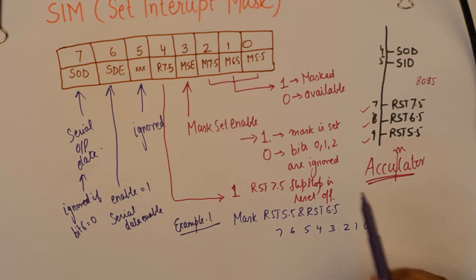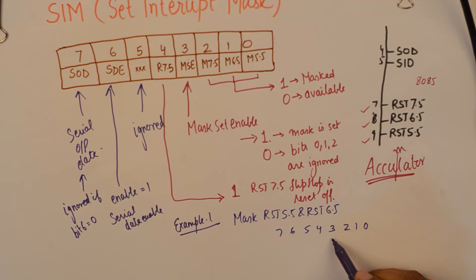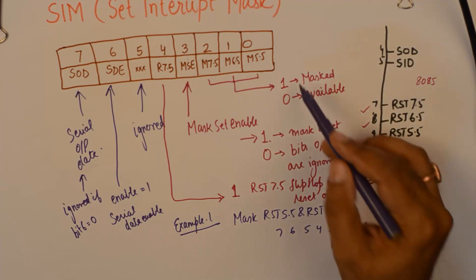In order to mask the interrupts, mask set enable should be 1. So I will make this bit as 1. And I want to mask 5.5 and 6.5. So I will make them 1.